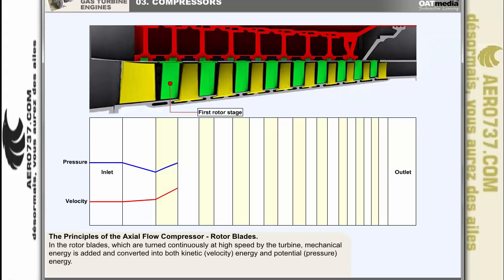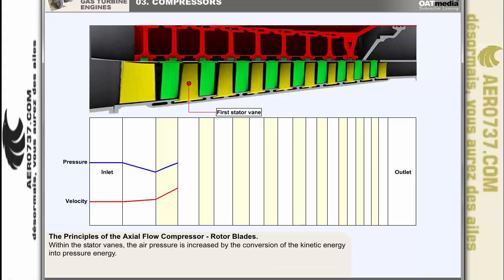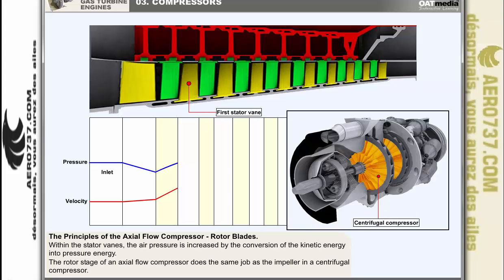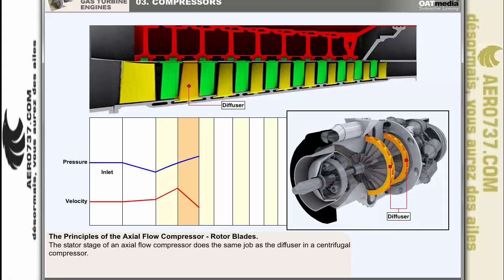In the rotor blades, which are turned continuously at high speed by the turbine, mechanical energy is added and converted into both kinetic velocity energy and potential pressure energy. Within the stator vanes, the air pressure is increased by the conversion of the kinetic energy into pressure energy. Essentially, the rotor stages of an axial flow compressor can be seen as doing the same job as the impeller in a centrifugal compressor, while the stator stages can be compared to the diffuser in a centrifugal compressor.